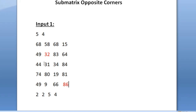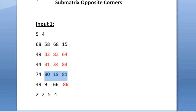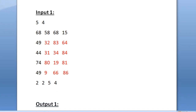It is given in the question that these two integers are opposite corners of a sub-matrix, and our task is to find that sub-matrix. So in this sub-matrix, the integers 32 and 86 would be the opposite corners - only in this sub-matrix would those two integers be the opposite corners. So we are printing this sub-matrix as our output.